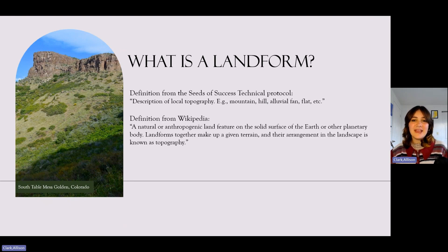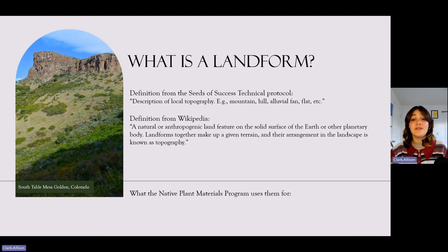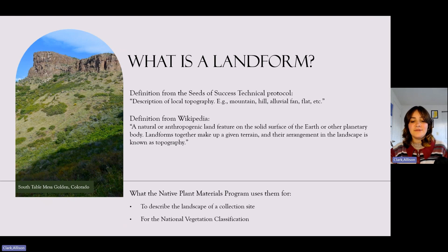Another definition from Wikipedia describes them as a natural or anthropogenic land feature on a solid surface such as the earth or another planetary body. Landforms together make up a given terrain, and their arrangement in a landscape is known as topography. The Native Plant Materials Program will use them specifically to describe the landscape of a collection site and for the National Vegetation Classification System at the end of your field season.